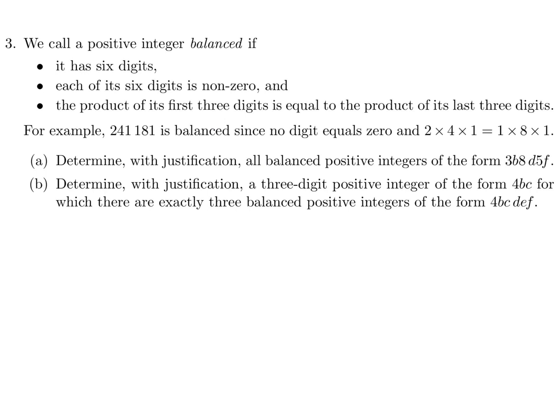We call a positive integer balanced if it has six digits, each of its six digits is non-zero, and the product of the first three digits is equal to the product of the last three digits. For example, 241181 is balanced since no digit equals 0, and 2 times 4 times 1 is equal to 1 times 8 times 1. Determine with justification all balanced positive integers of the form 3B8D5F.